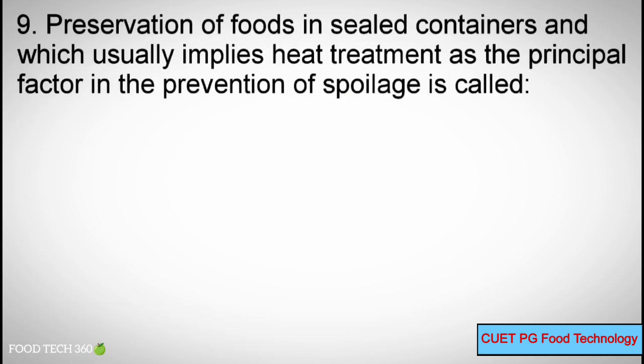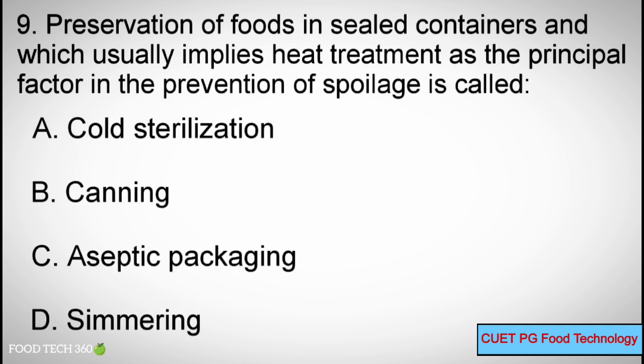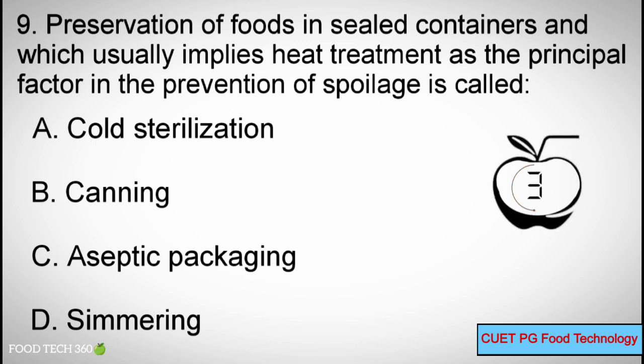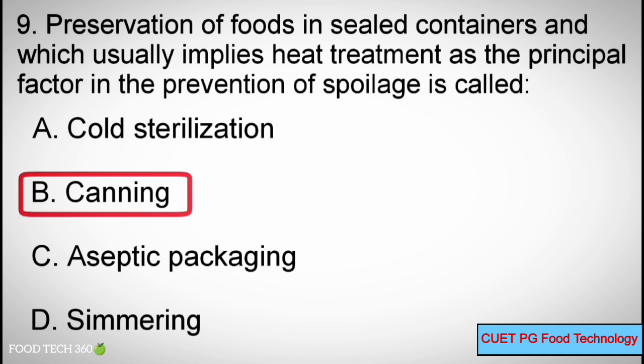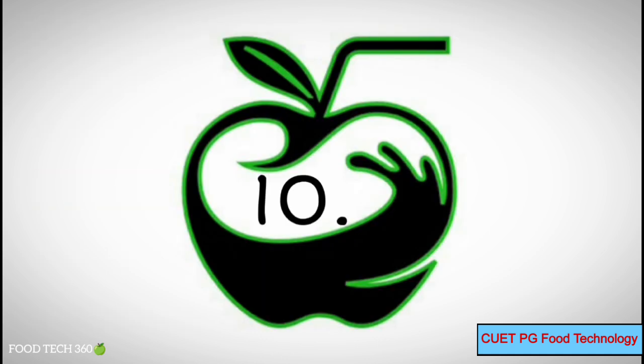Question number 9. Preservation of foods in sealed containers, which usually implies heat temperature as the principal factor in the prevention of spoilage, is called: Options A: Cold sterilization, B: Canning, C: Aseptic packaging, D: Simmering. Correct answer: B, Canning.